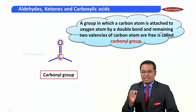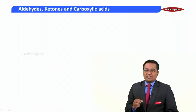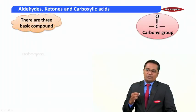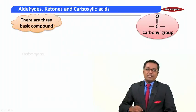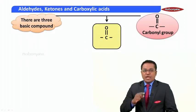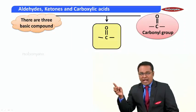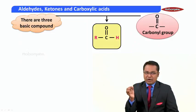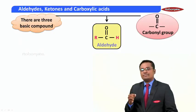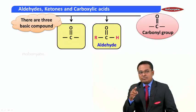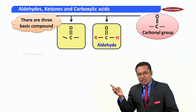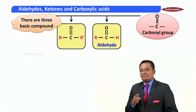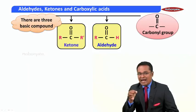Let us move on to the next topic, that is classification. There are three basic compounds where a carbonyl group is present. In the first, one side of the carbonyl group is an alkyl group R and the other side is H — these compounds are called aldehydes. In the second, both sides of the carbonyl group have alkyl groups, which may be the same or different — these are called ketones.